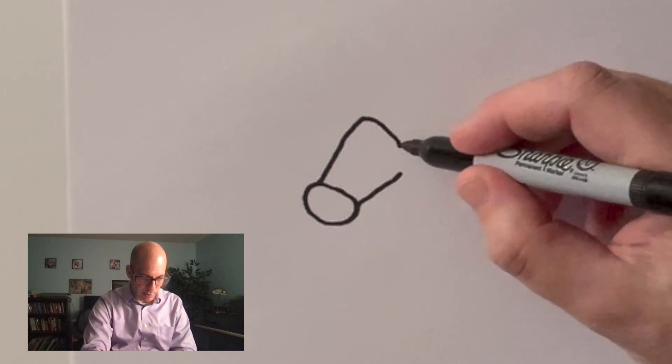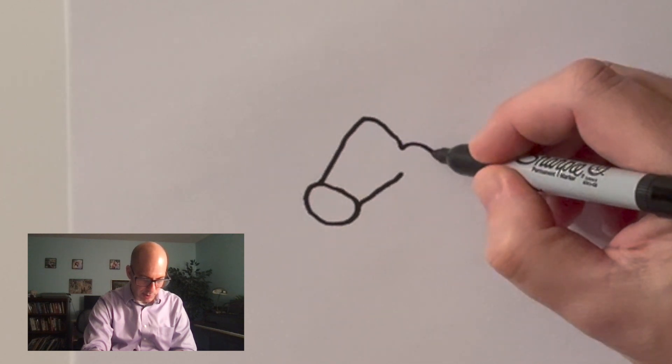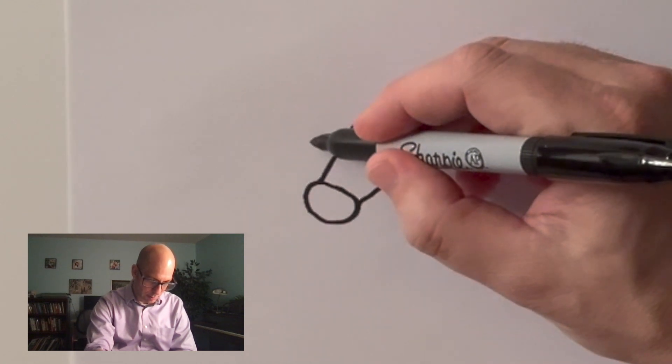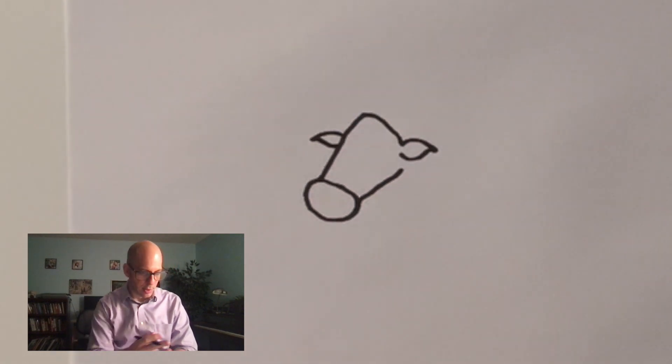But don't worry. Once we add in the ears, we're just gonna be a C shape and then kind of a curvy S shape. C shape, kind of curvy S shape. Now it's got like that cow feature to it.